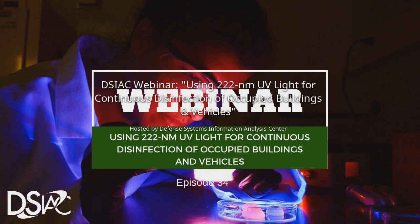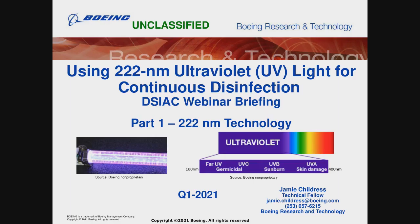With that, I will go ahead and turn over the proceedings to our presenters. This webinar is entitled toward dealing with UV light — a specific wavelength of UV light — for continuous disinfection for occupied buildings and vehicles. I'll turn it over to Jamie and PJ, who will be your presenters today. We will have a Q&A session at the end, and you can chime in with Q&As via the chat, and I'll keep track of them and facilitate getting them answered at the end of the briefing.